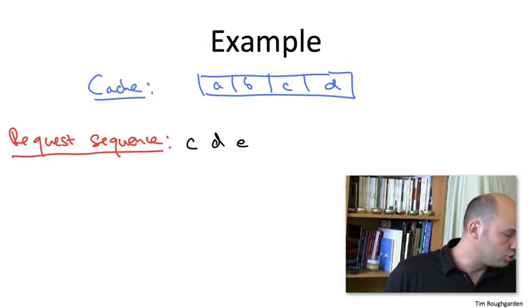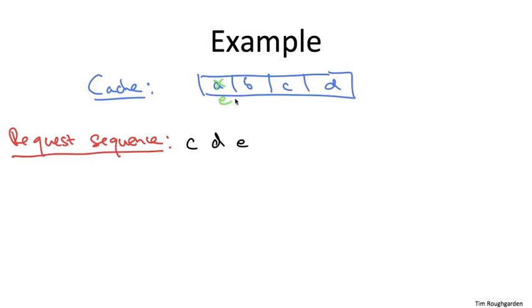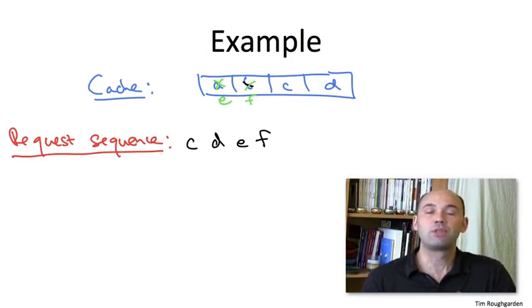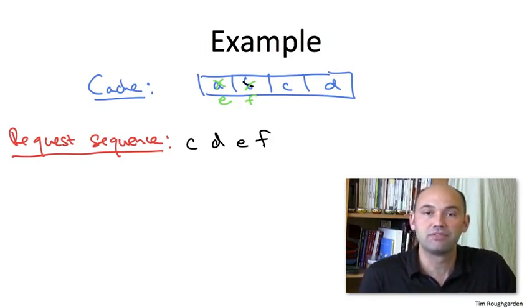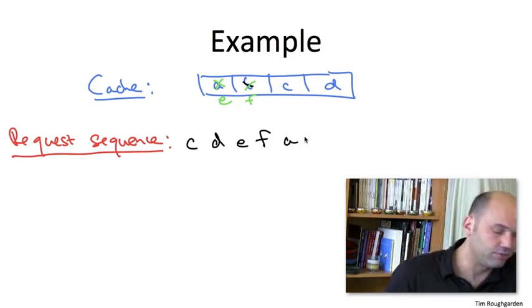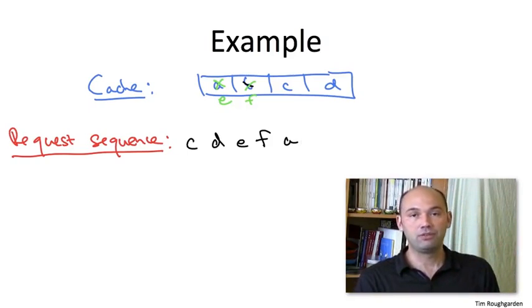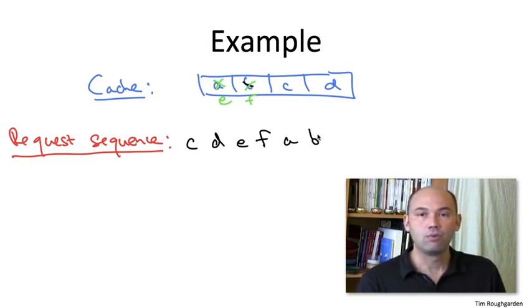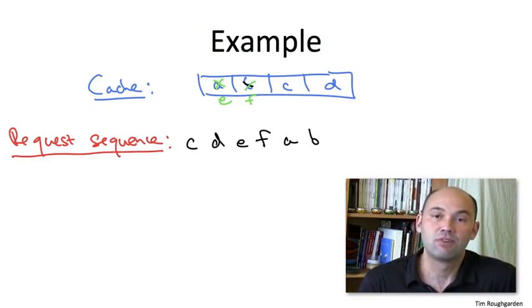For this example, let's assume that we evict A to make room for E. Assume further that the next request that comes in is for a new piece of data F. Again, it's not in the cache so we have to evict something to make room for it. Let's assume we get rid of B in order to bring in F. And now, an unhappy situation but something that could certainly occur is we get a request for something that used to be in the cache but which we have since evicted. So for example, if the next request is for A, then we're stuck. It's going to be another page fault. We have to evict something to bring in A. And similarly, if there's a B, again, we're paying the price for evicting B to make room for F in the past.